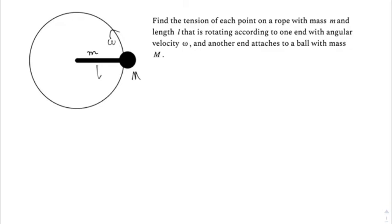So today let's look at a shorter problem. Let's find the tension of each point on a rope with mass m and length l that's rotating according to one end with angular velocity omega, and another end attached to a ball with mass big M.